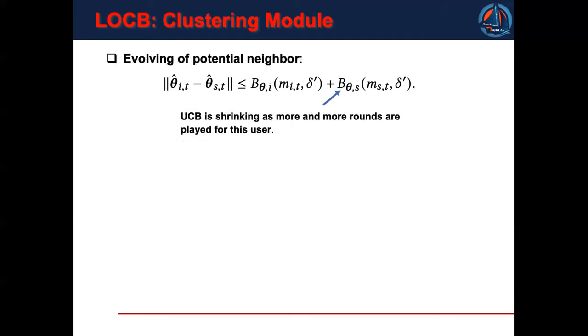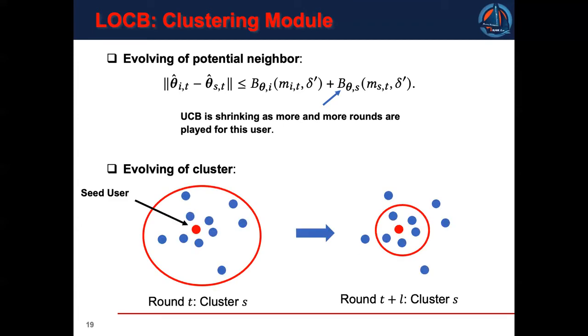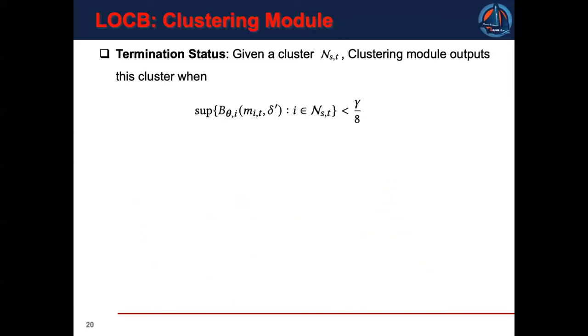In the exploring process, after we play more and more rounds for users, UCB becomes smaller and smaller because we have more confidence about the estimation. In consequence, the neighborhood among users is changing. For example, a user may be removed from the potential neighbors of a seed. Accordingly, the membership of a cluster is also changing. And basically, the members of a cluster will become less and less as more rounds are played. So we need a termination condition to determine when we should output the clusters. In this paper, we output the cluster when the UCB of each user is smaller than the threshold, where gamma is predefined by the learner.